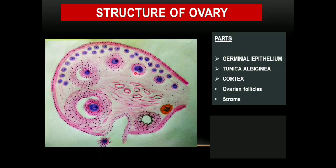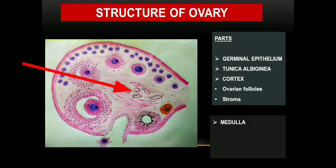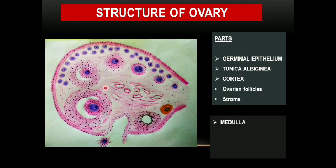The outer cortex and inner medulla are the two main zones. The stroma of the cortex is made up of connective tissues and cells called stromal cells. Within this stroma, ovarian follicles of various stages of development can be seen — primordial, primary, secondary, and Graafian follicles — as well as corpus luteum and corpus albicans. The medulla is the core portion of the ovary, consisting of fibroelastic connective tissue embedded with blood vessels and nerves. The hilum is where blood vessels, nerves, and lymphatics enter the ovary.